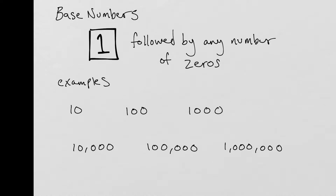A couple of concepts that we need to know for Vedic Maths. The first concept we're going to talk about is base numbers. A base number is basically a 1 followed by any number of zeros. Examples of base numbers are 10, 100, 1,000, 10,000, 100,000, and 1,000,000. Just keep in mind that a base number is a 1 followed by any number of zeros.